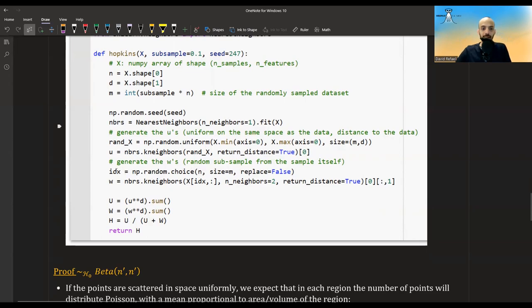Then I generate the W's where I take a random sample from the data itself. Here, I create random indices of the data. Here, I take the actual data. And again, I calculate the nearest neighbor in the data, but I take the second nearest because this is itself a data point. So the nearest neighbor will be zero, it will be itself. We'll have a distance of zero. So I take the second closest point, which will be the actual point that is not itself. And these are the W's here. I exponentiate them and I sum them and I calculate the U divided by U plus W. And then I get H.